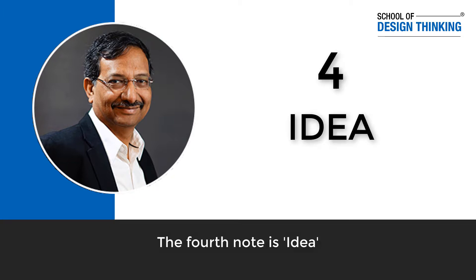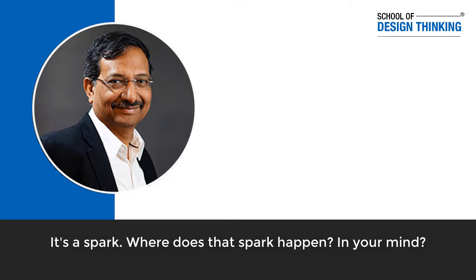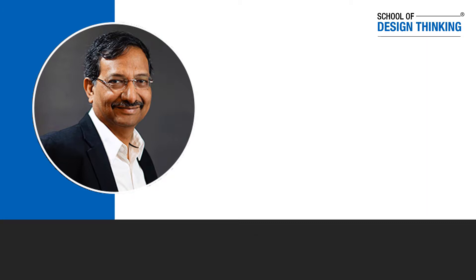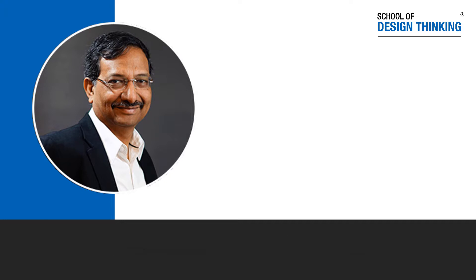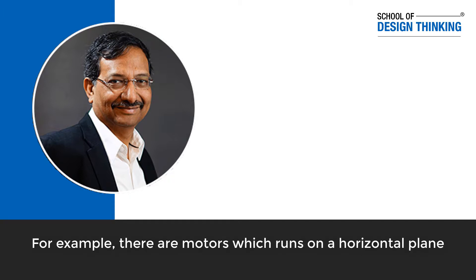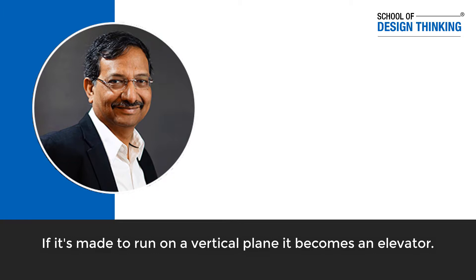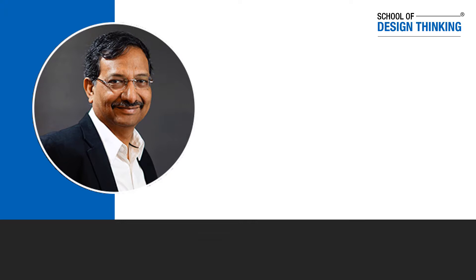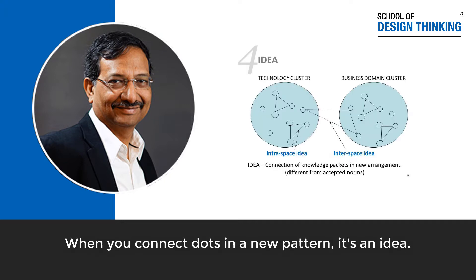Fourth is idea. You are thinking about a problem and suddenly it's solved — it's a spark. What is that spark? It's happening in your mind — some neurons get connected, a new connection happens. A motor which runs on a horizontal plane, when you start making it run vertically, it becomes an elevator. It's a small idea — you are just connecting dots. When you connect dots in a new pattern, it's an idea.